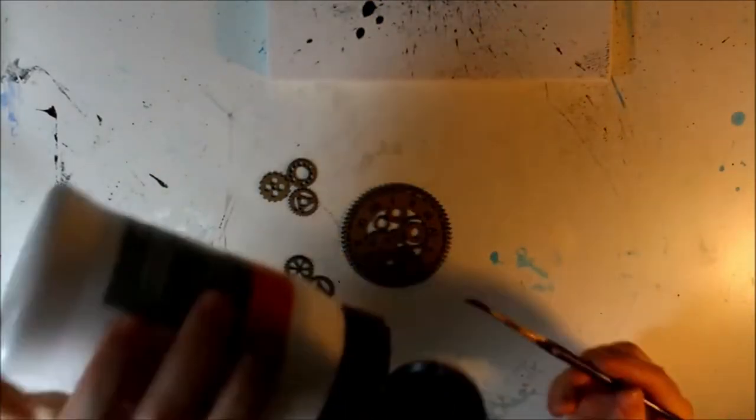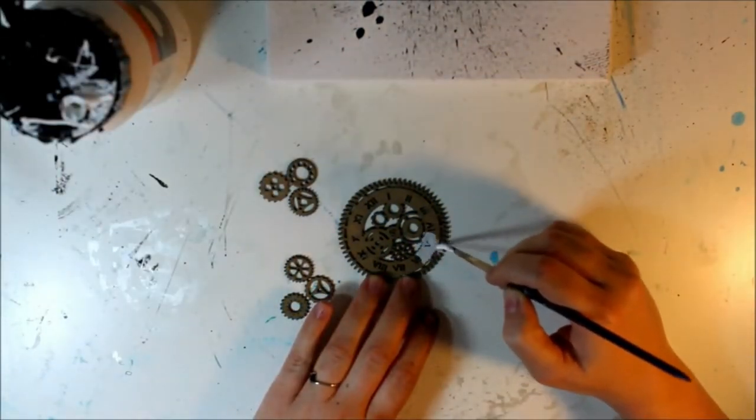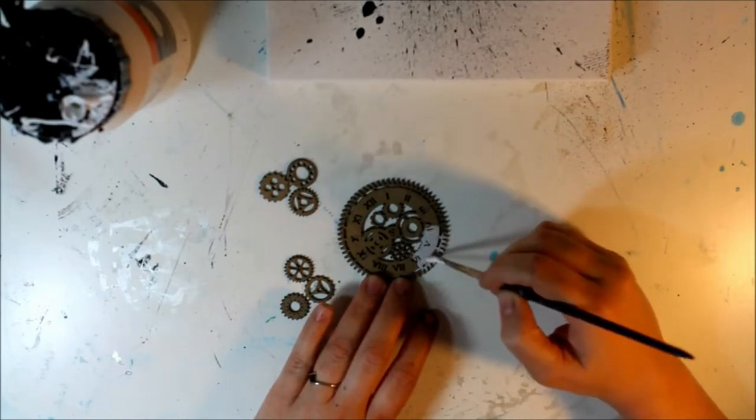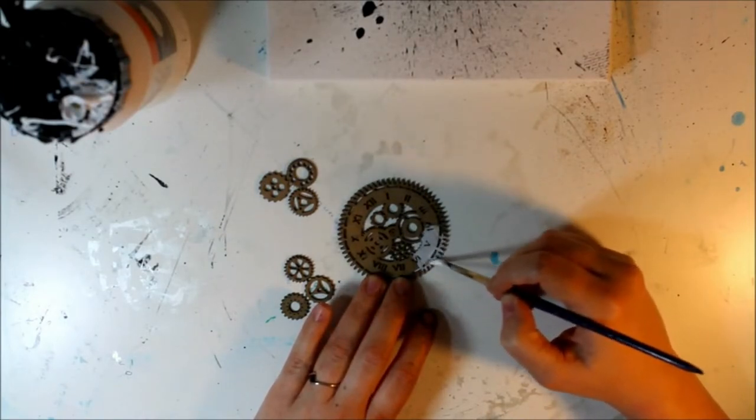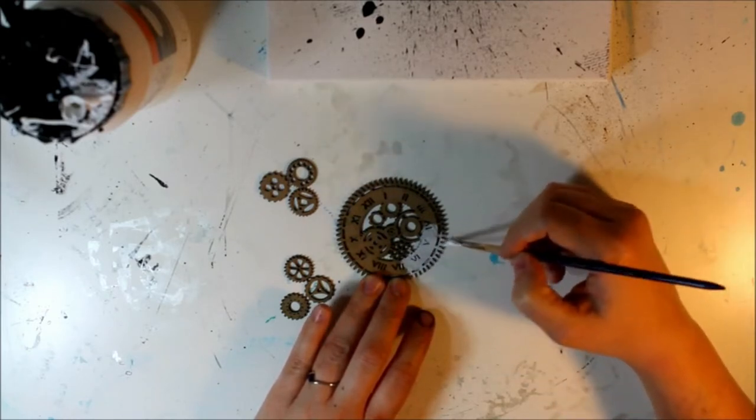But every once in a while, I think it's important to kind of step back and just do something really simple. Whether it's no color, very little paint. I mean, in this piece, I'm just using ink, some gesso and chipboard pieces on a surface that I've stamped just a little bit. And that's it.